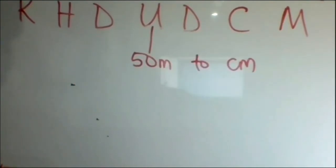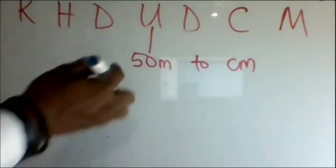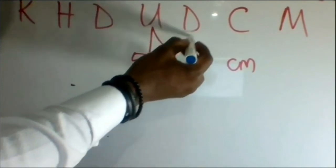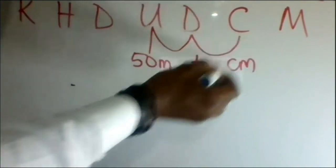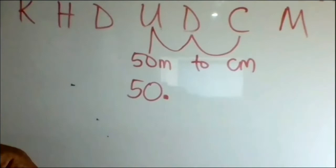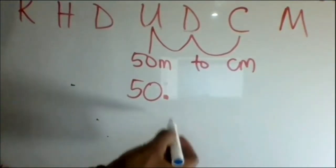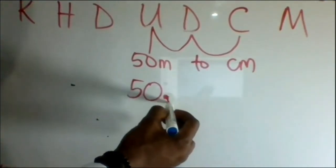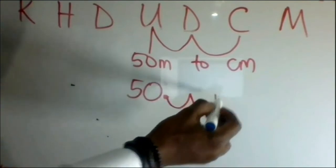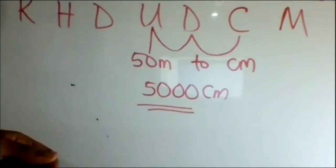For example, convert 50 meters to centimeters. From units to centi, the point will move once, twice. Therefore, for 50 meters, we also move the point once, twice. 50 meters is 5,000 centimeters.